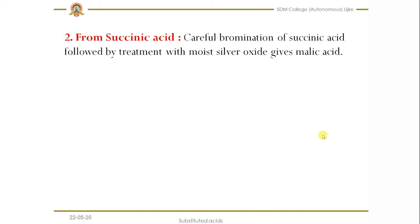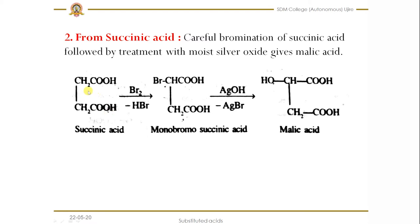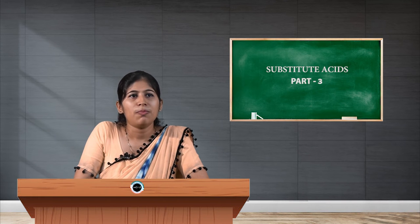The next method is from succinic acid. Succinic acid is one of the dicarboxylic acids. When you treat succinic acid with bromine, addition takes place — bromine adds to one of the carbons — and we get monobromo succinic acid. When you then treat this with silver oxide or silver hydroxide, the bromo group is replaced by a hydroxy group, and as a result we get malic acid.